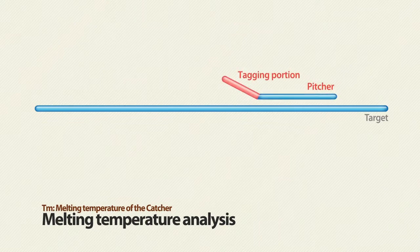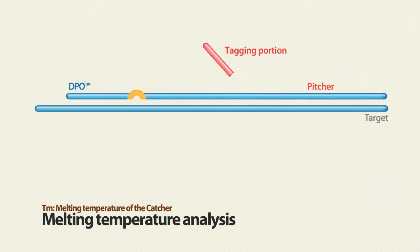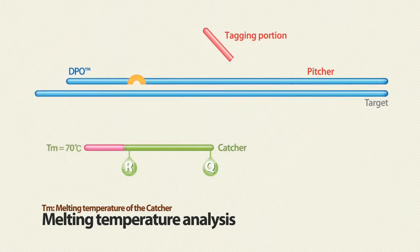Since the catcher is designed to have a designated TM, when the target sequence exists in the sample, the expected unique TM value is obtained during the melting temperature analysis.